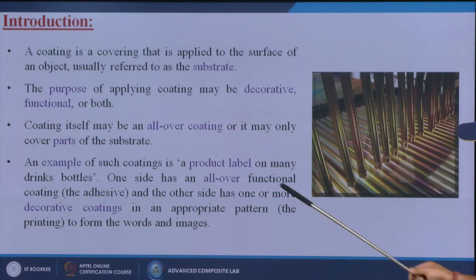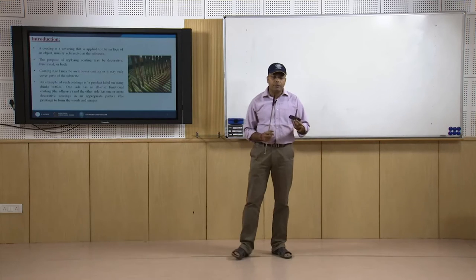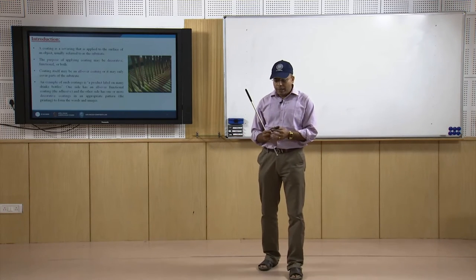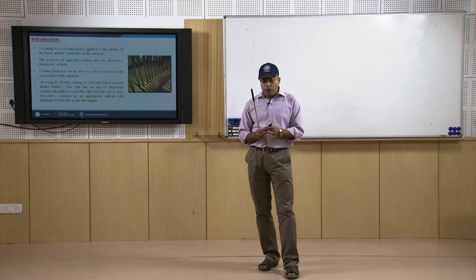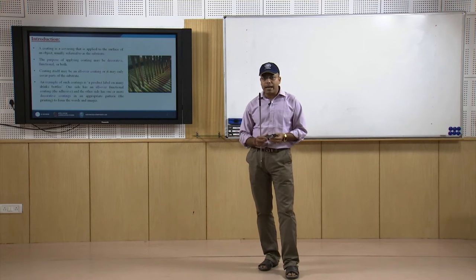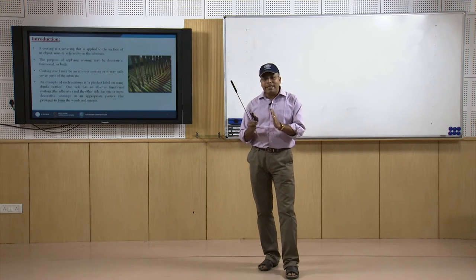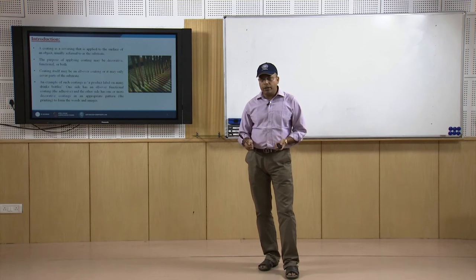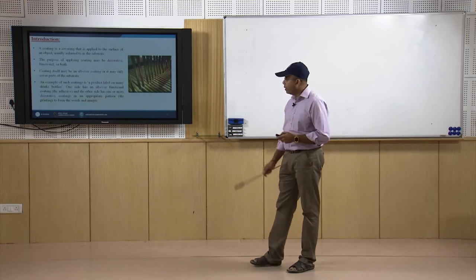An example of such coating is a product label on drinks bottles. One side has an all-over functional coating — the adhesive — and the other side has one or more decorative coatings forming words or images, mainly printing. For instance, on a Coca-Cola or Thumbs Up bottle, one side shows the drink name, contents, price, and manufacturing date, while the opposite side has adhesive so it sticks to the bottle.